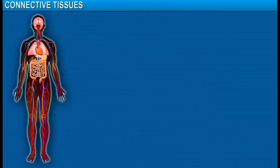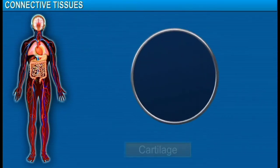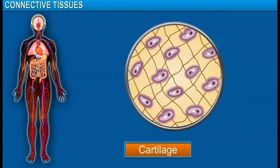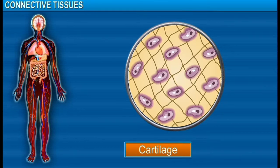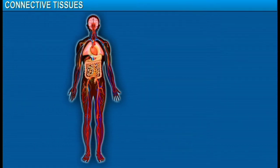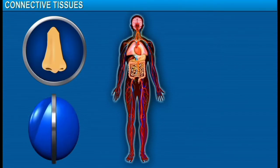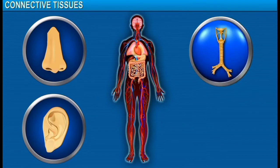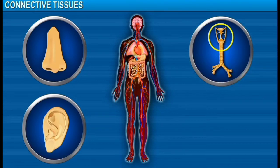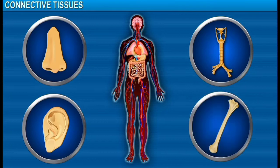Another type of connective tissue is cartilage. Cartilage has widely spaced cells suspended in a matrix of proteins and sugars. It is found in the nose, ears, rings of the trachea, larynx, and at the end of long bones to give flexibility.